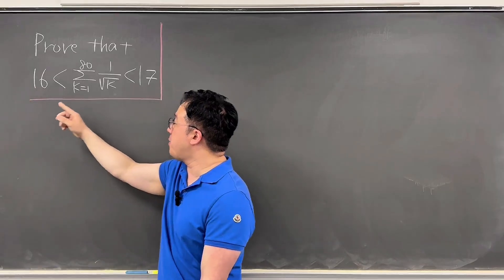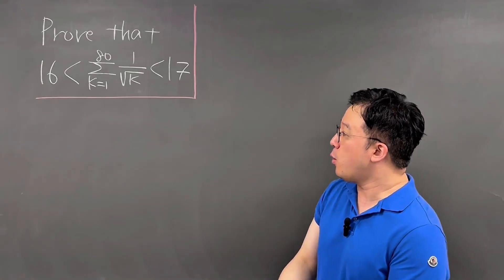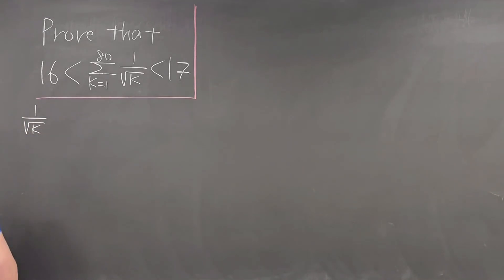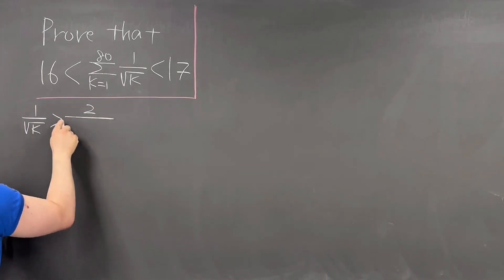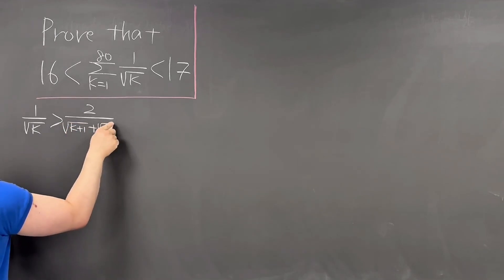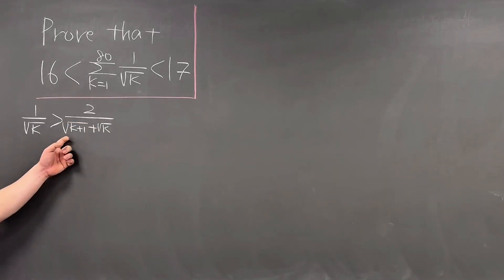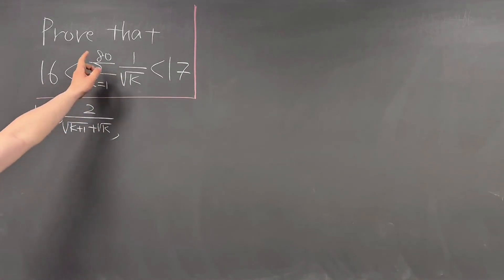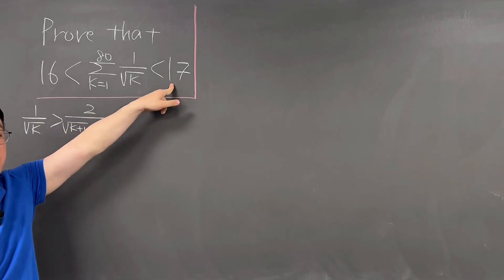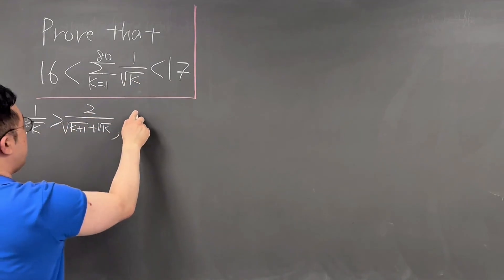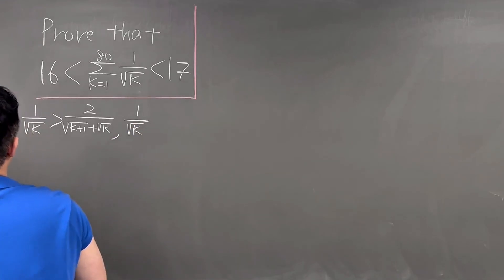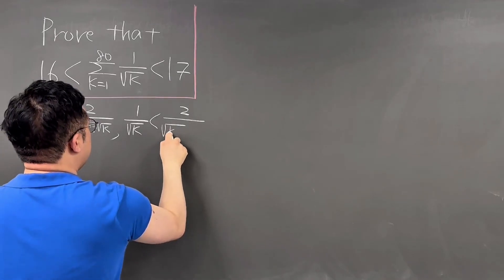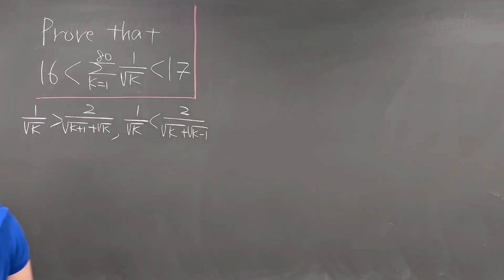We have the lower bound of 16 and the upper bound of 17. For the lower bound, I'll be using how 1 over square root of k is greater than 2 over square root of (k+1) plus square root of k, which is quite easy to see. For the upper bound — summation from k=1 to 80 of 1 over square root of k less than 17 — I'll be using how 1 over square root of k is less than 2 over square root of k plus square root of (k−1).